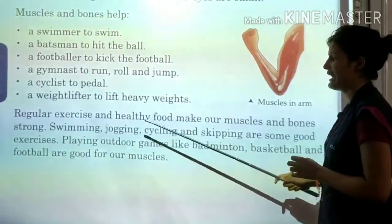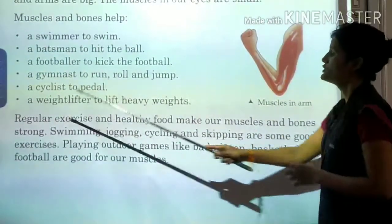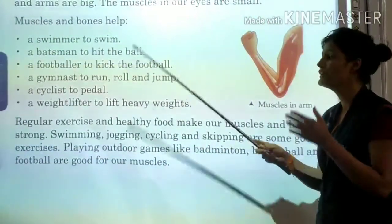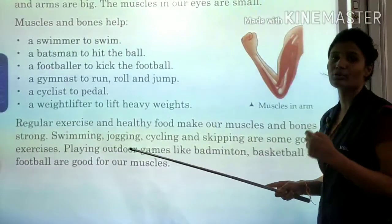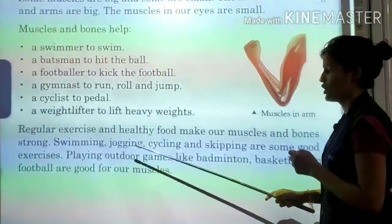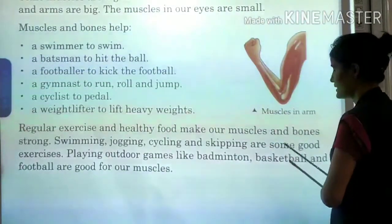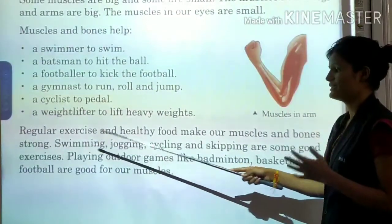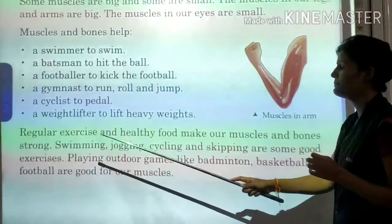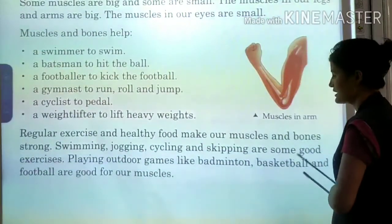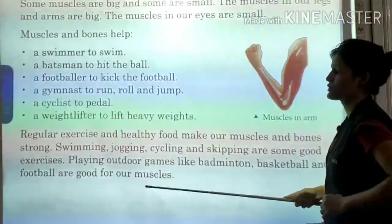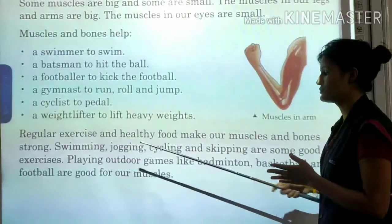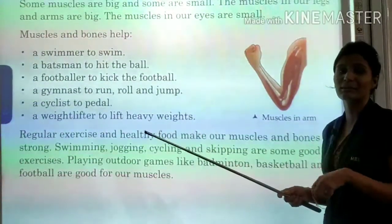Regular exercise and healthy food make our muscles and bones strong. We should always exercise regularly and eat healthy and proper food to keep our muscles and bones stronger and healthy. Swimming, jogging, cycling, and skipping are some good exercises. Playing outdoor games like badminton, basketball, and football are also good for our muscles.